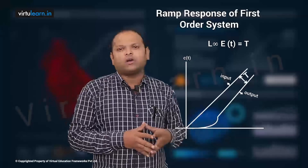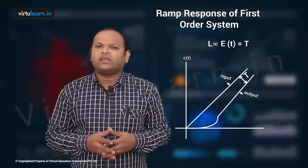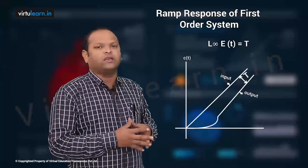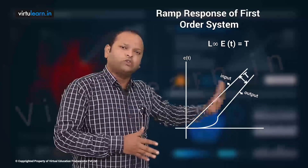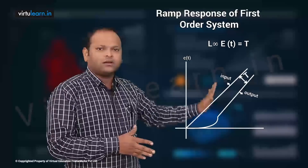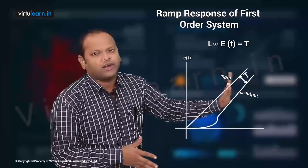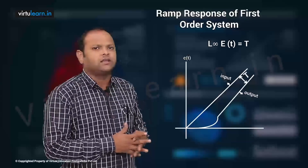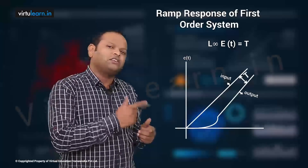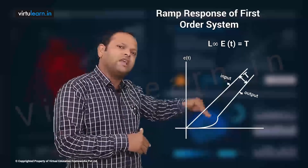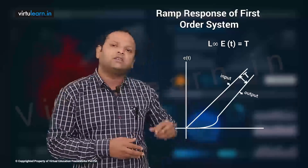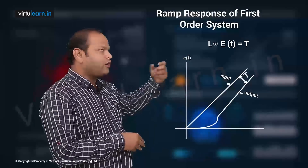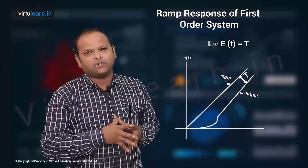At infinity, both r(t) and c(t) go to infinity because of the t term. So before reaching infinity, after the transient response, we find the steady state error. That error is constant for a long time — and that constant value is T, the time constant. So steady state error does not mean t = ∞; it means the error after the transient has died out.